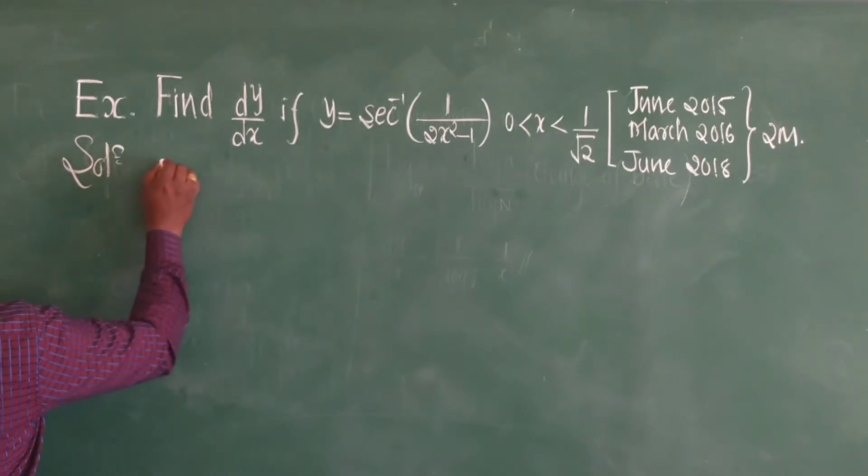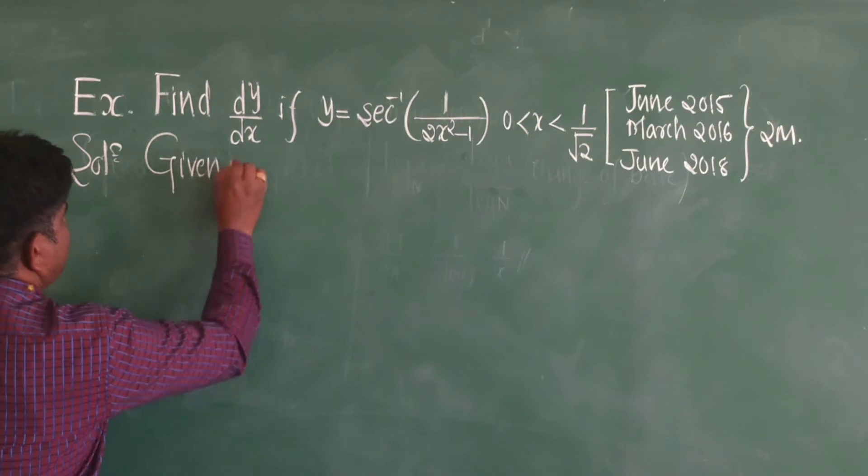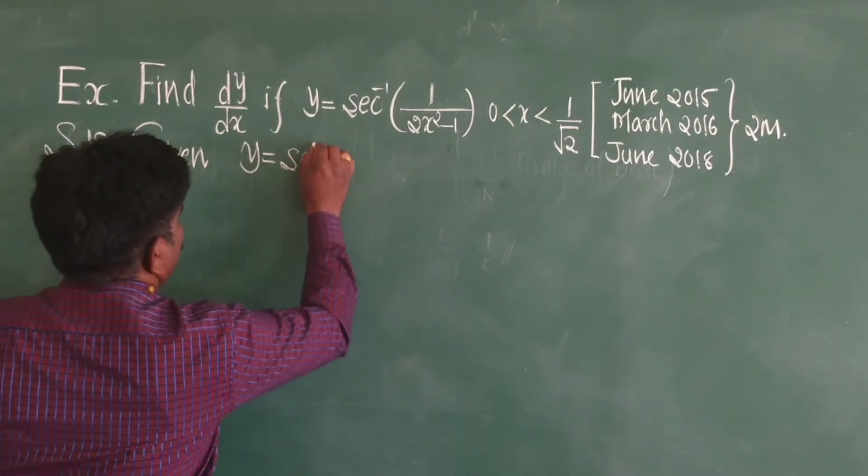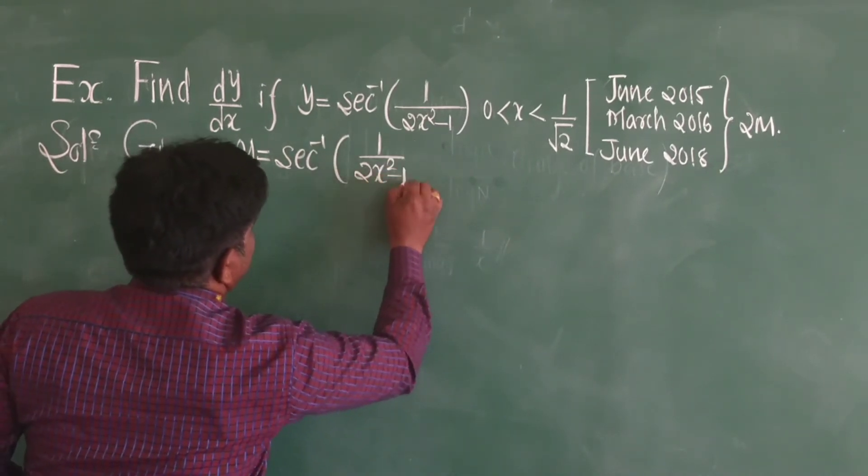Solution: Given y is equal to sec inverse of 1 upon 2x square minus 1.